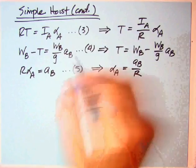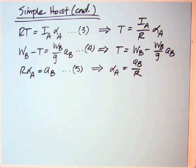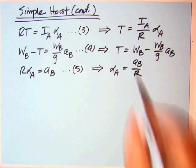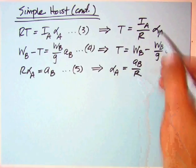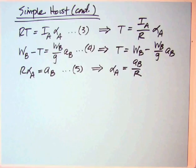From three, I've solved for T: IA over R times alpha A. From four, I've solved for T: WB minus WB over G times A sub B. We could pull out a WB but that traps AB, at least for this algebra. We'll use that later though. Then solve for alpha A because I'm going to substitute that up here, and I'll end up with one equation in A sub B.